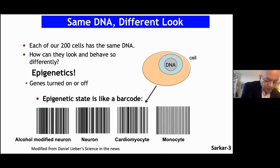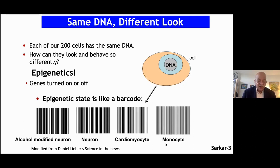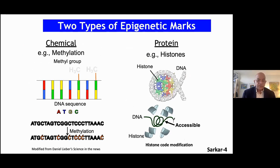Let me introduce epigenetics, particularly epigenetic coding that controls the behavior of cells. Our body has about 200 cell types and all contain the same DNA. However, they often look different and behave differently. A good analogy is that different cells have different epigenetic codes and marks — like barcodes — which makes them look or behave differently. Epigenetic marks tell our cells whether or not to read the gene, making the gene function differently.